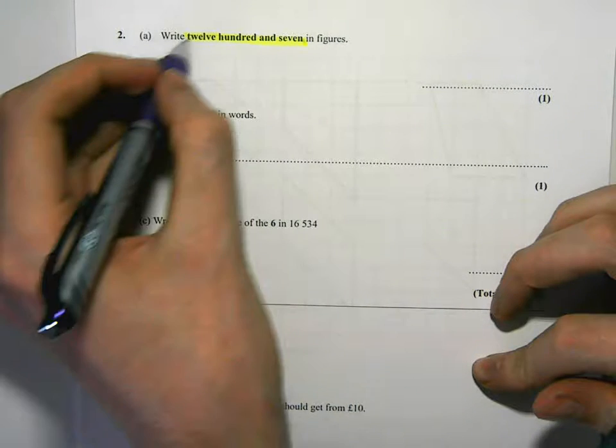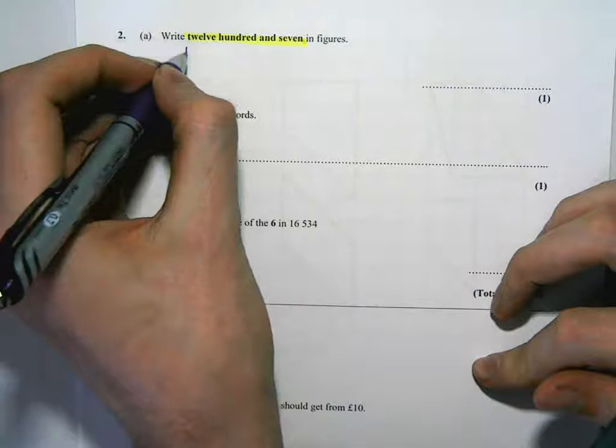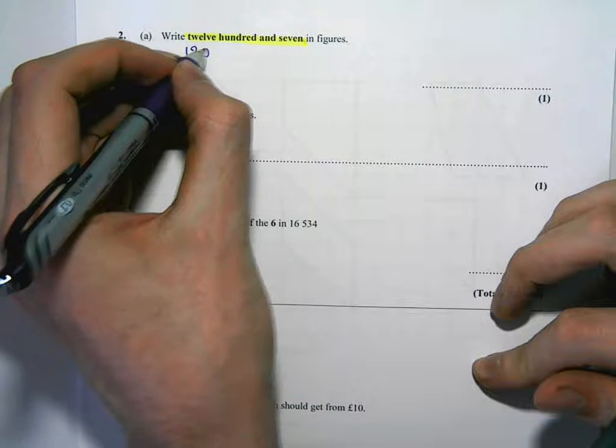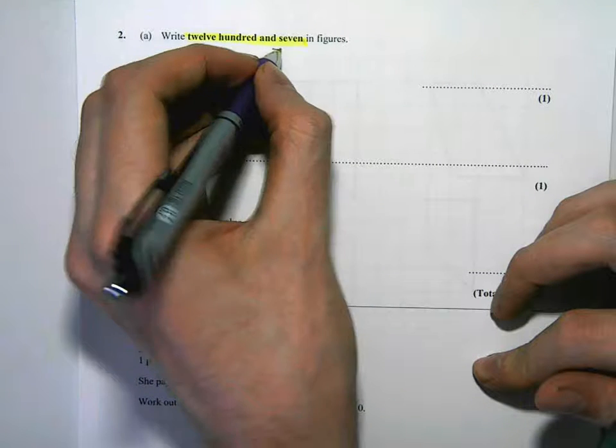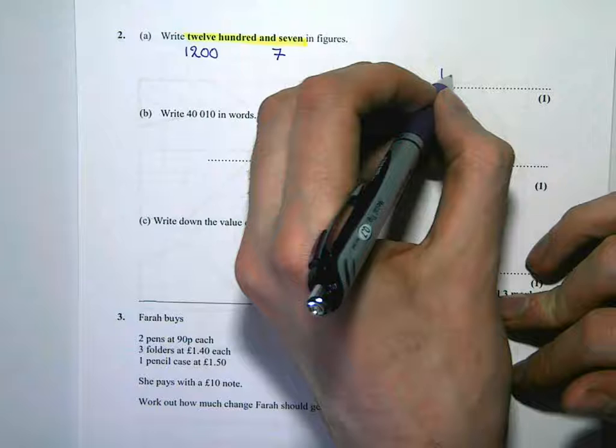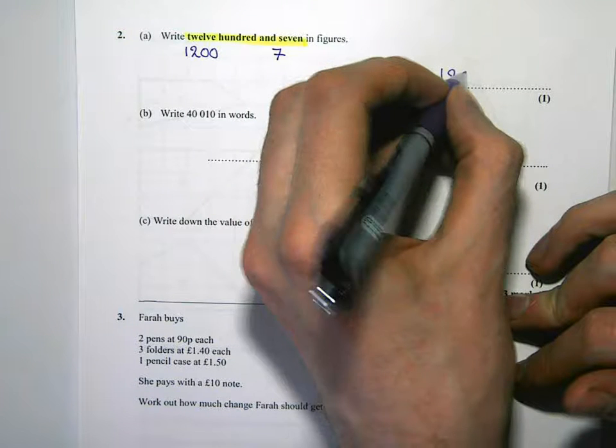So 1,200 we should know looks like this. 1,200 and 7 looks like this. If we put them together we've got 1,207.